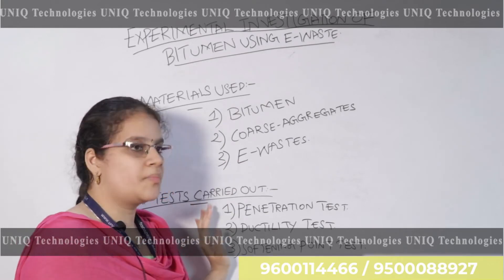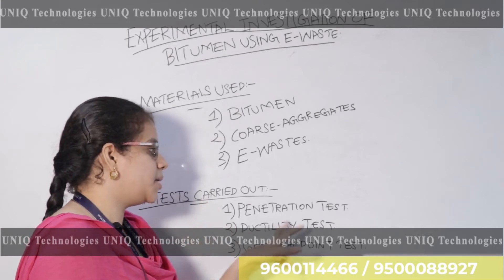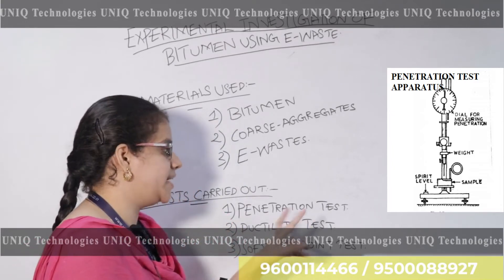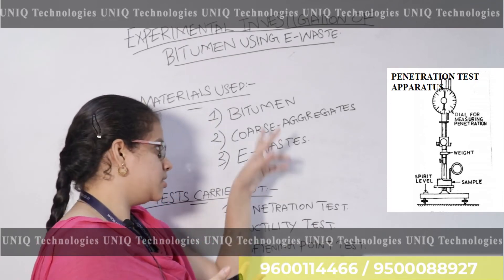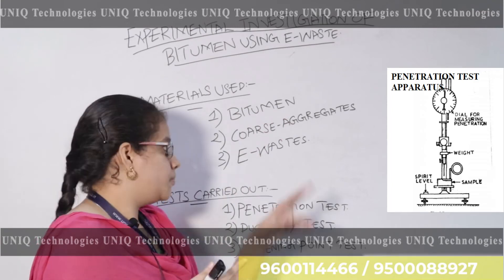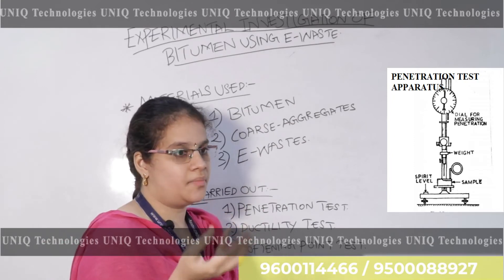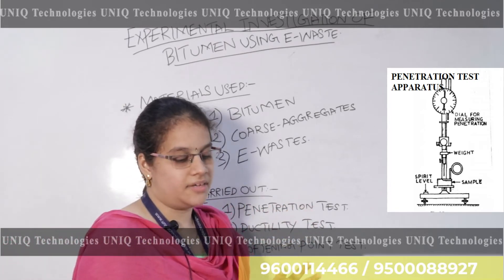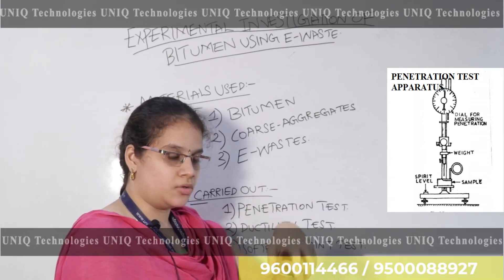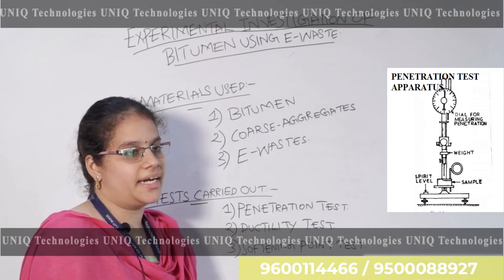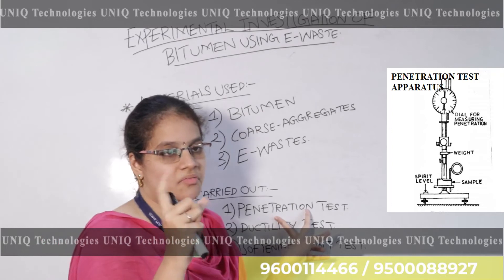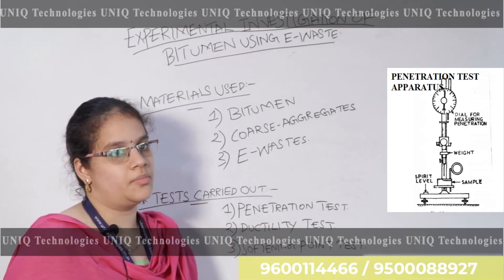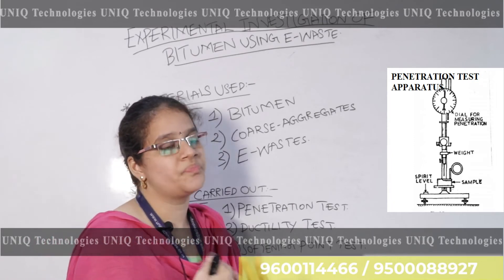We carry out three major tests. The first is the penetration test. A penetrometer is the instrument used. We heat and soften the bitumen, then use the penetrometer needle for 5 seconds and take a reading to calculate the hardness of the bitumen.